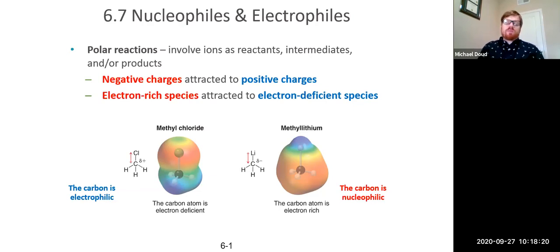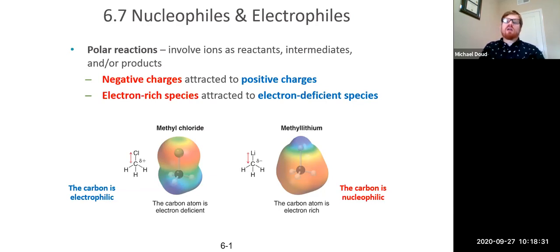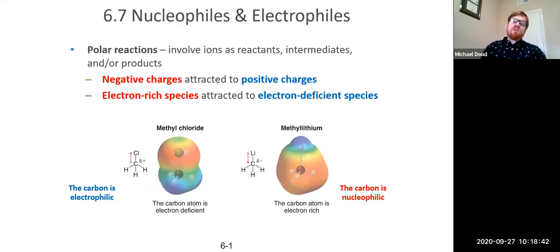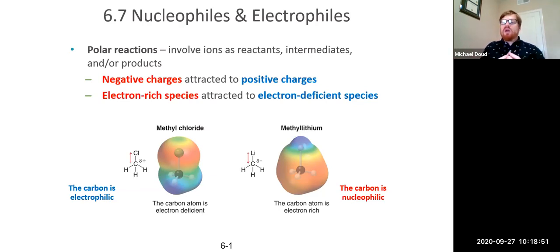Basically, a lot of organic chemistry reactions are going to involve polar molecules one way or another. When we reviewed functional groups, they involve a lot of polar bonds, and those polar bonds create areas of high electron density carrying a partial negative charge and areas of low electron density carrying a partial positive charge. These partial charges are naturally going to align with one another because positive charges attract negative charges.